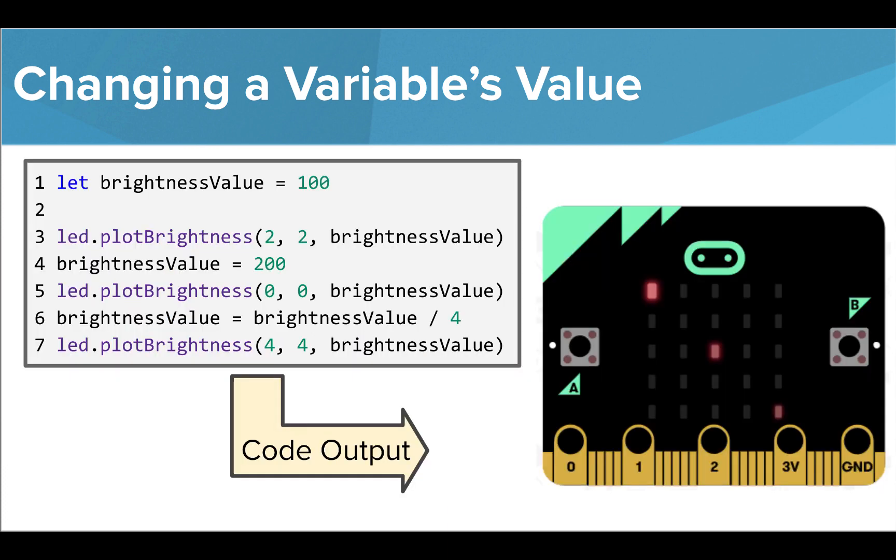When we run this code, our output will be 3 LEDs on with brightness values of 200, 100, and 50.